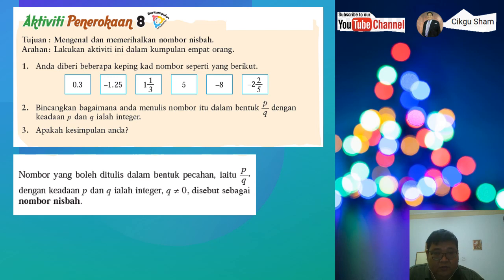Nombor yang boleh ditulis dalam bentuk pecahan iaitu P per Q, P itu adalah pengangka, Q adalah penyebut. Dengan keadaan P dan Q adalah integer ya, kita dah lihat dulu integer tu apa, dan Q tak boleh kosong ya. Kalau Q adalah kosong, maka nombor itu adalah tidak tertakrif ya, tidak dapat ditakrifkan.